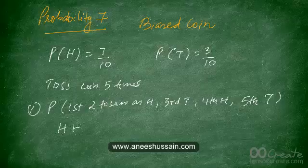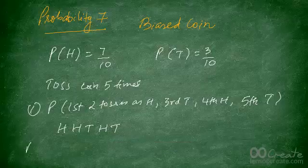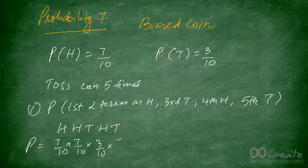The sequence is: head, head, tail, head, tail. For this particular question it's straightforward because there is only one way that we can get this outcome. The first is a head, the second is a head, the third is a tail, the fourth is a head, and the fifth is a tail. So the probability of this event is 7/10 for the first head, 7/10 for the second head, 3/10 for the third being a tail, 7/10 for the fourth being a head, and 3/10 for the fifth being a tail. Since this is the only arrangement, we do not need to multiply by the number of arrangements.